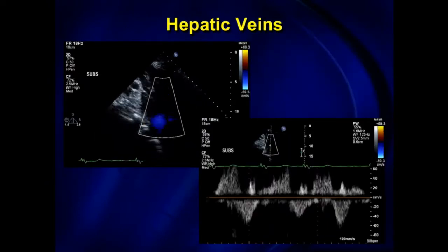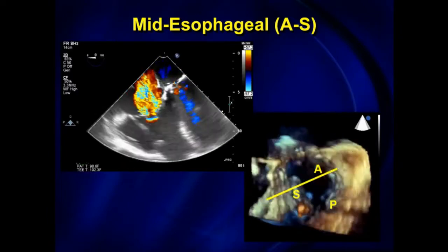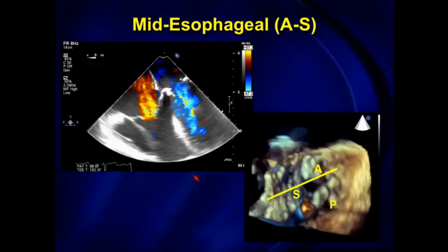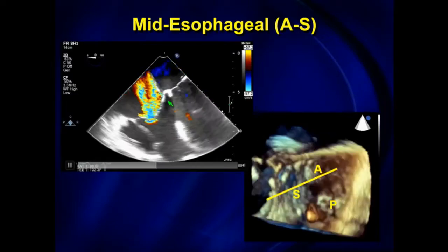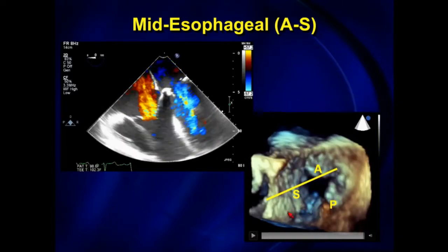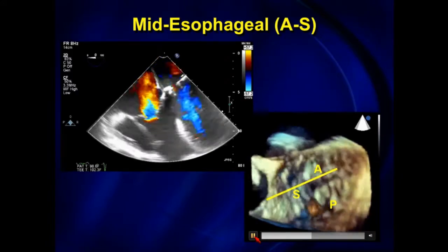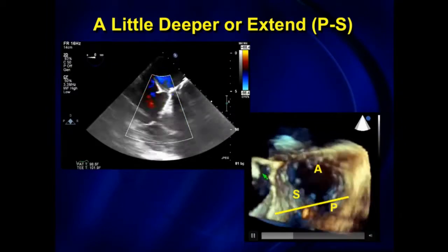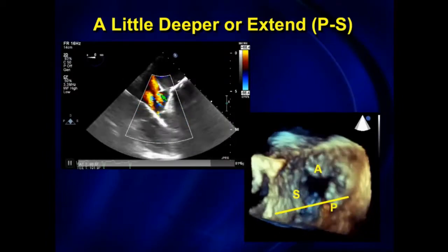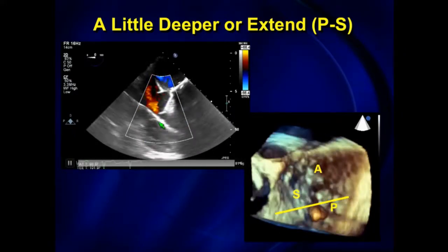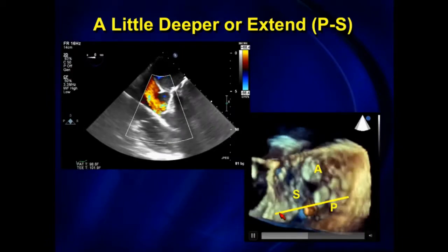Always image the hepatic veins to document reversals there. Now for transesophageal imaging — these two images are from the same patient for correlation. Similar to the transthoracic four-chamber view, if you see the LV opened up and the mitral valve, we should see the anterior and septal leaflets. We have anatomic correlation because in the commissure between the septal and posterior leaflets we see a pacemaker lead. If you advance the probe a little deeper, like the transthoracic view, once you start seeing a little bit of coronary sinus without much mitral valve or LV, we're seeing the septal and posterior leaflets.